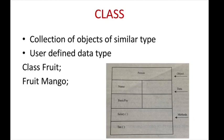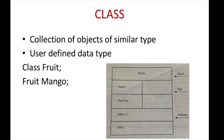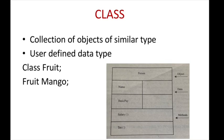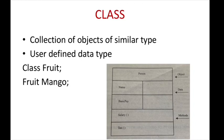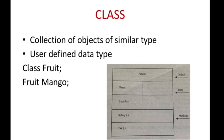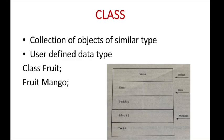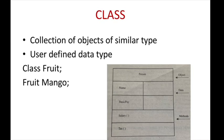Class is a collection of objects of similar type. We know when a program is executed, the objects interact by sending messages to each other. For example, customer and account are two objects in a banking program. Then the customer object will send a message to the account object requesting for balance. Each object contains data and code to manipulate the data. The entire set of data and code of an object can be made a user-defined data type using the concept of a class.